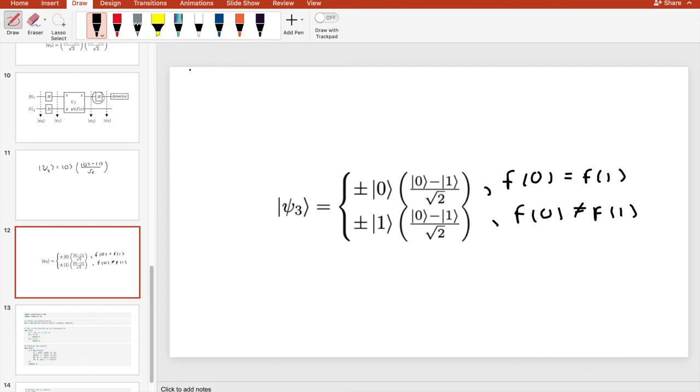So contrary to classical means of solving Deutsch's problem, we can determine a primary character of two functions by only performing one evaluation. Alright, so that concludes the outline of the algorithm itself. Now we will take a look at the code in Penny Lane's framework.